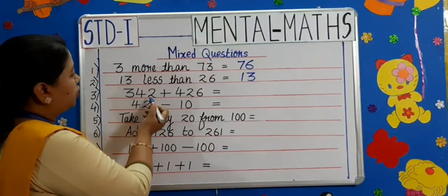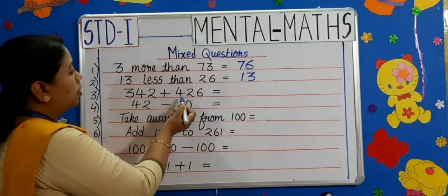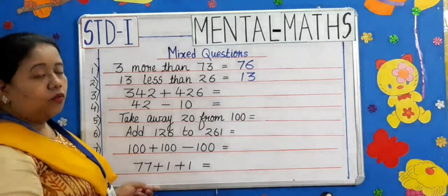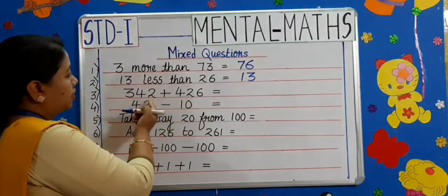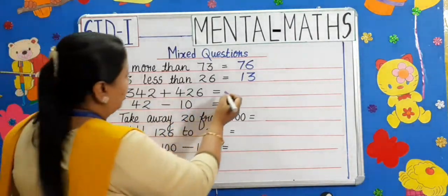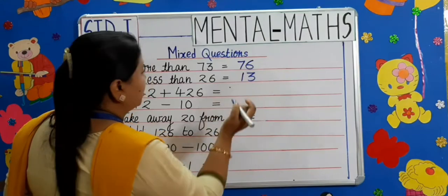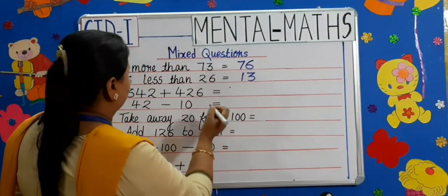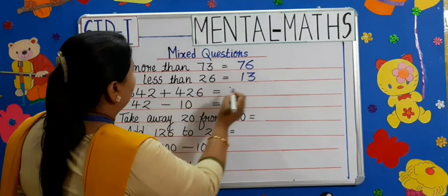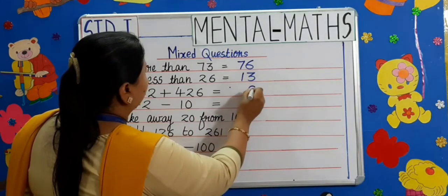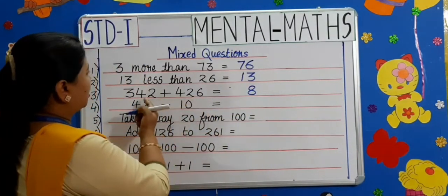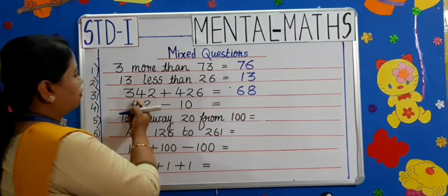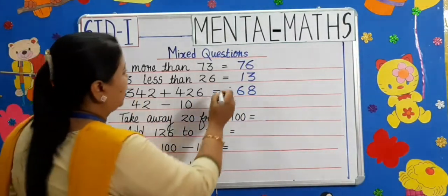Moving on to the third one: 342 plus 426. Here we have to add these two. We are going to do ones first. 6 plus 2 is 8, 2 plus 4 is 6, 4 plus 3 is 7. The answer is 768.